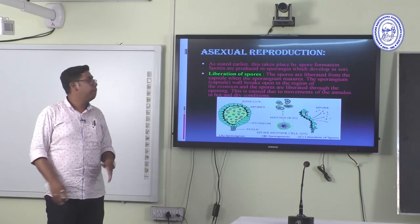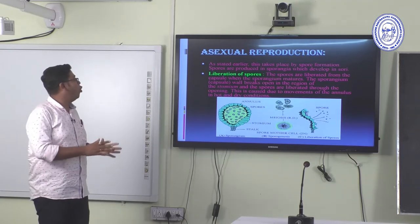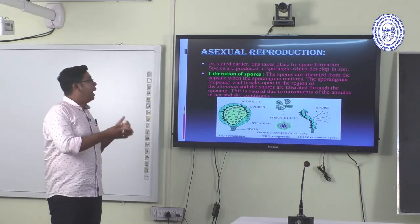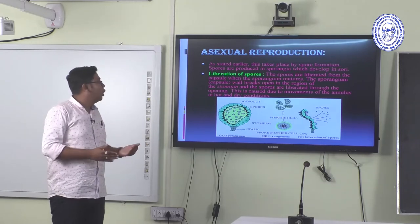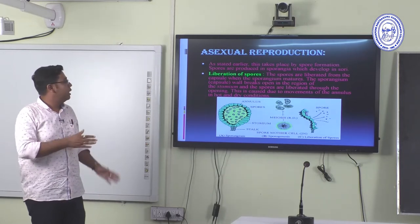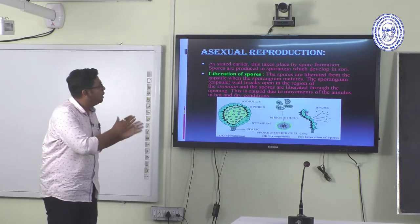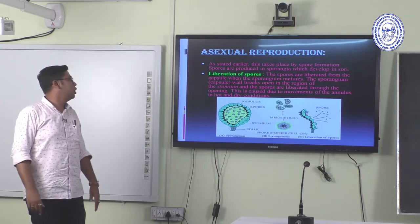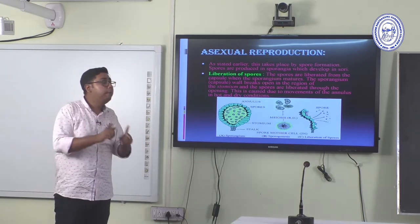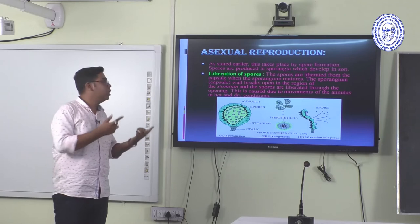Asexual reproduction takes place by spore formation. Spores are produced in sporangia which develop in sori. The spores are liberated from the capsule when the stomium matures — the capsule wall breaks in the region of the stomium and the spores are liberated through the opening.